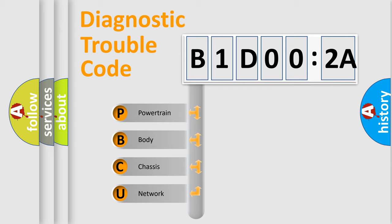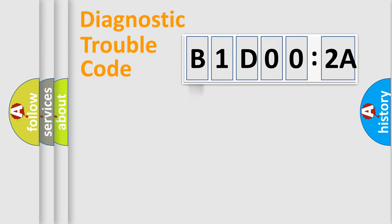We divide the electric system of automobile into four basic units: Powertrain, Body, Chassis, Network. This distribution is defined in the first character code.